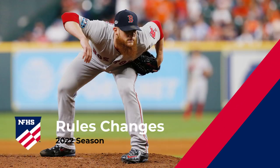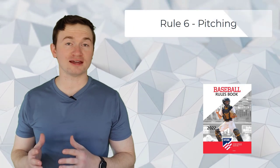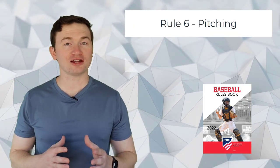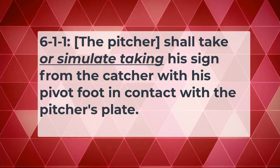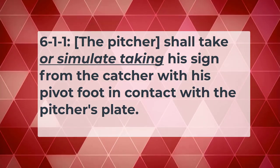For the 2022 season, there's only one rules change that umpires need to be aware of, and it revolves around pitchers taking their signs from the catcher. This change is covered in Rule 6, which covers pitching, Section 1, Article 1. And this change is in addition to the rule specifically talking about when the pitcher is taking their sign from the catcher. It now says, the pitcher shall take or simulate taking his sign from the catcher with his pivot foot in contact with the pitcher's plate.